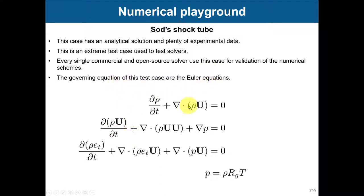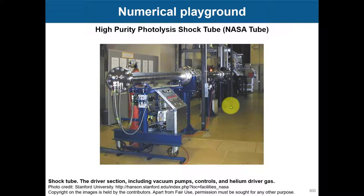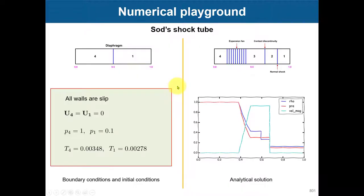We're solving the full set of Euler equations but with no viscosity. The fact that you're neglecting viscosity doesn't mean they are easy — actually they are more complicated, because viscosity normally damps or smooths your solution. This case has an analytical solution as well as experimental values. The initial setup has a high and low pressure region separated by a diaphragm. When we break the diaphragm, we get an expansion fan, a contact discontinuity, and a normal shock.